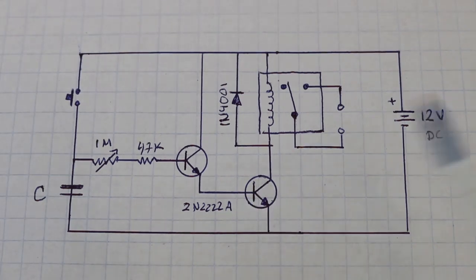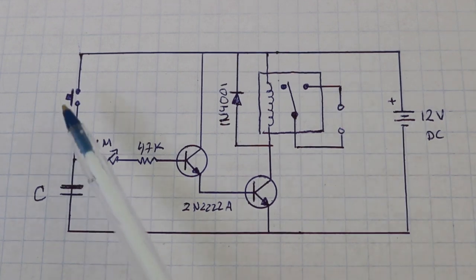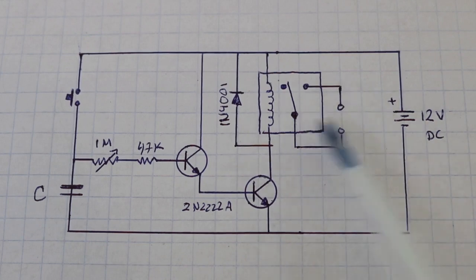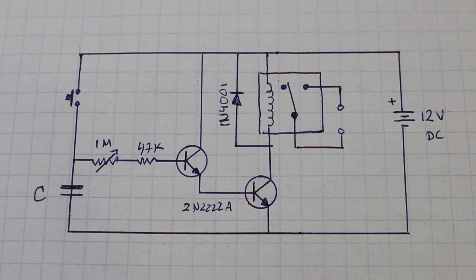And therefore, our load connected to these points will be always on and will turn off when we press the button. In this configuration our load is off and turns on when we press the button.